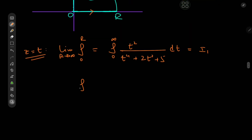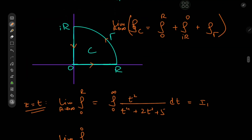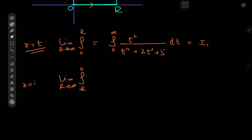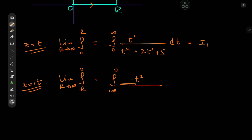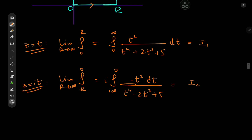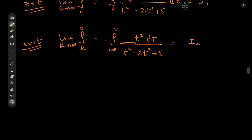For the integral from iR to 0 in the limit R → ∞, z is on the imaginary axis so we parameterize z = it. We get the integral from i∞ to 0 of (it)² which is −t² up top, and dz = i dt. The denominator becomes t⁴ − 2t² + 5. This is a real-valued integral — a cool bonus integral we'll call I₂.